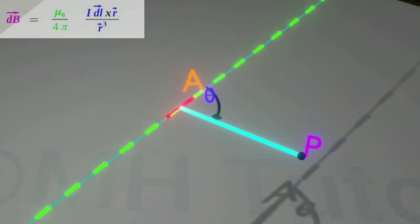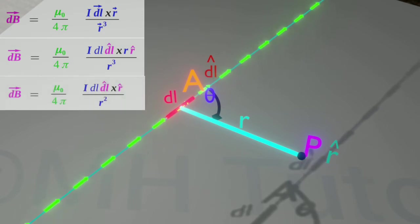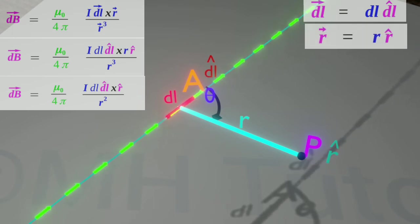After noting all these, the Biot-Savart law can be written like this. Here, DL and cap DL are the magnitude and direction of the vector DL respectively. And R and cap R are the magnitude and direction of the vector R respectively.